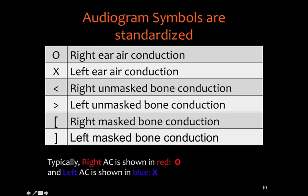The symbols used to plot on the audiogram are standardized. By convention, red was always right and blue was always left, so color can also convey information. Right ear air conduction uses circles, left ear air conduction uses X's, and there are different symbols for masking and for bone conduction under different testing conditions.